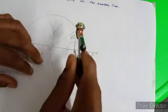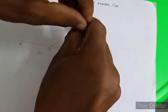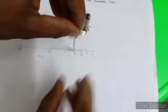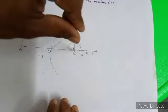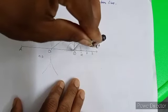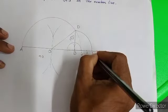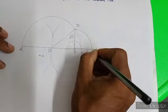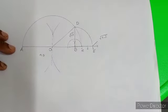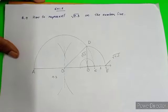Now, this is BD. BD is 9.3. Taking BD as radius, I will draw an arc here. And this particular point A, B, C, D, E, I will mark this as E. And this particular point is root over 9.3. So this is how we can represent root over 9.3 on the number line.